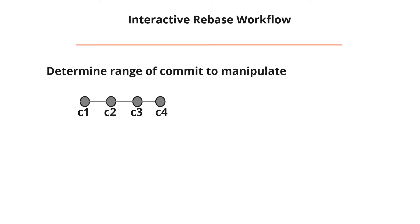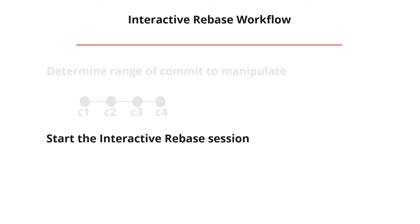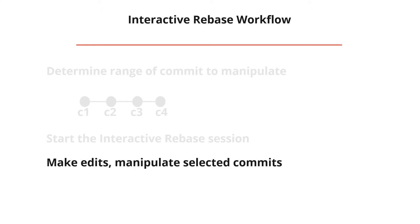The general workflow for interactive rebase is: first, determine the range of commits you want to manipulate — you don't have to manipulate all commits. For example, if you created three commits for a single feature, you can combine those three into one. Then start an interactive rebase session, where you select whether you want to reorder, delete, squash, or reword (change) the commit messages. Finally, make your edits to the selected commits.